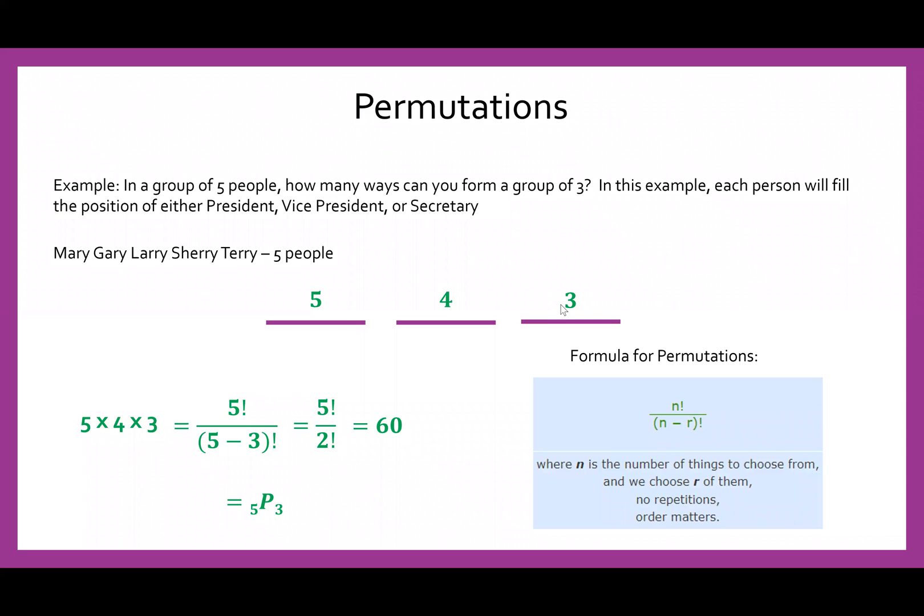And the last thing we need to add is just notation. So as before, in combinations, when we had five C three for combination, here we would have five P three, P being for permutation.